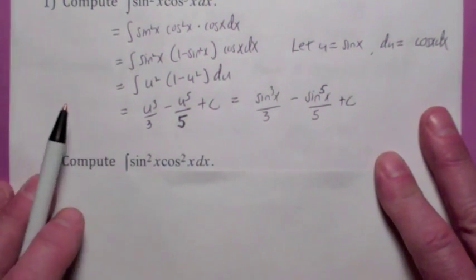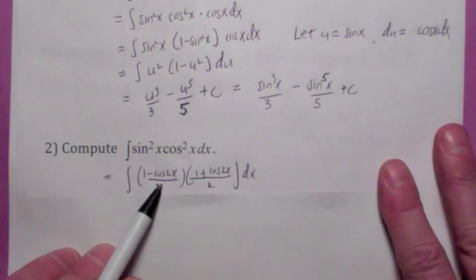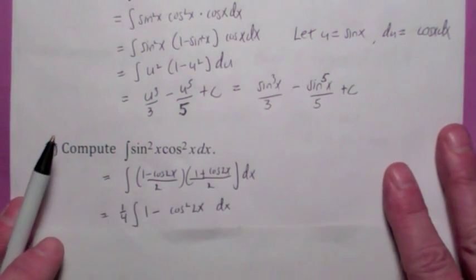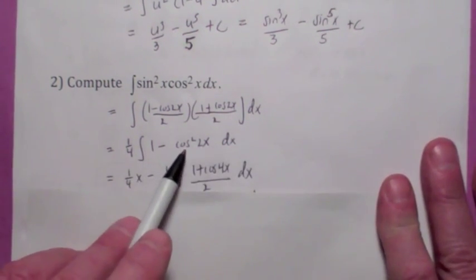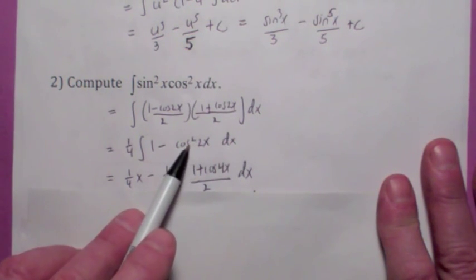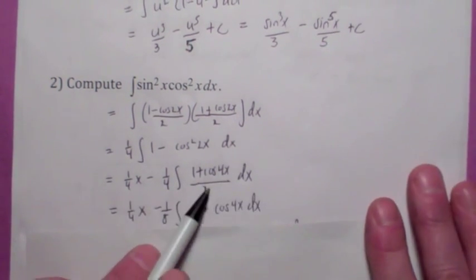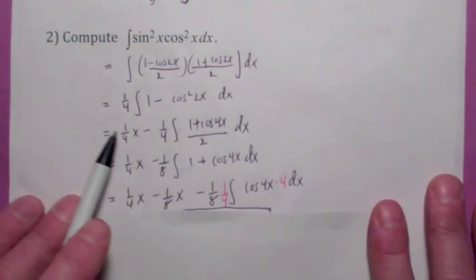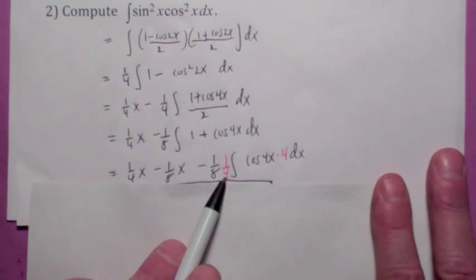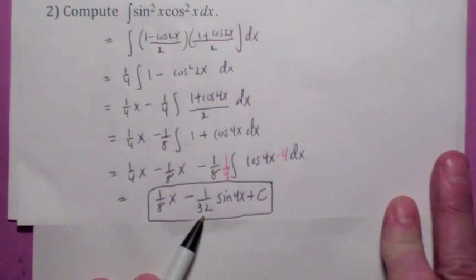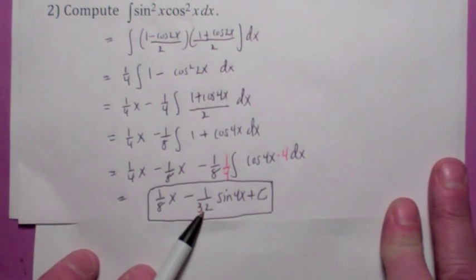If both powers are even, it becomes a little messier—you use the reduction formulas we just talked about. For this particular case, you'd use the reduction formula for both sine squared and cosine squared. When you multiply out and move the one-fourth outside, integrating gives you one-fourth x. For cosine squared of 2x, you apply the reduction formula again: cosine squared 2x equals 1 plus cosine 4x over 2. After integrating with a u-substitution, the coefficient becomes 1 over 32. Combining everything, the final answer is one-eighth x minus 1 over 32 sine 4x plus c.